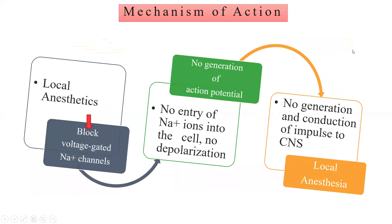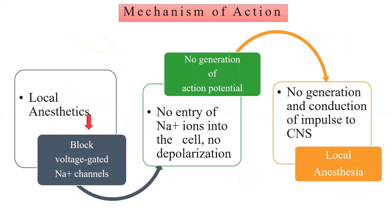Regarding the mechanism of action of local anesthetic agents, as we saw in the definition, they block the generation and conduction of nerve impulses. Impulse generation is totally based on the action potential, and action potential is based on the movement of sodium and potassium across the membrane. Local anesthetic agents block the voltage-gated sodium channel, so sodium ions cannot enter the cell. Therefore, no depolarization occurs, the action potential is not generated, and there is no conduction of impulses towards the CNS — thereby producing the local anesthetic effect.